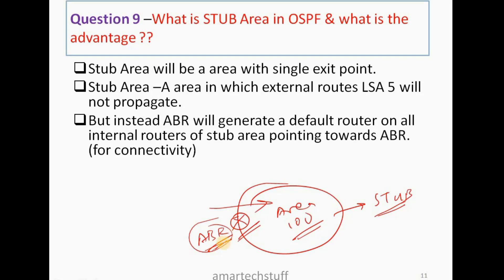The ABR will propagate a default route to all the internal routers of the stub area, pointing towards the ABR, to maintain connectivity. The advantage of making an area stub is that since it has only a single exit point, there is no need for LSA 5 to propagate into it. If routers need to reach those external routes, they have a default route pointing towards the ABR. This avoids unnecessarily burdening internal routers with external route processing.